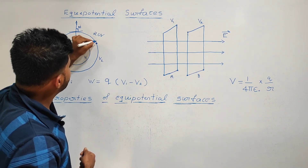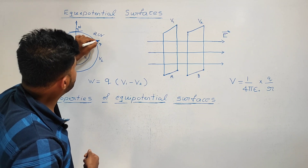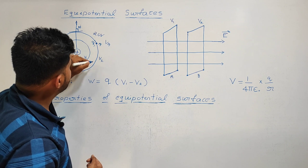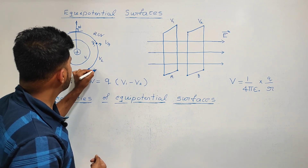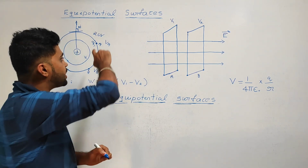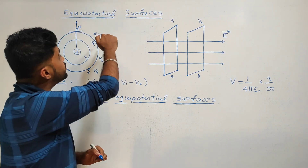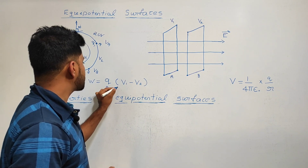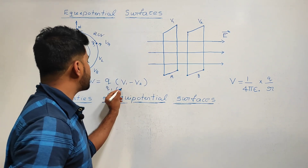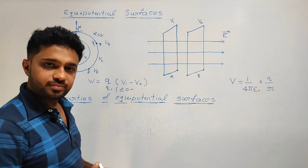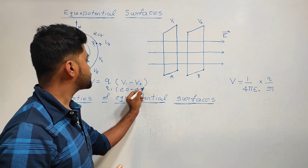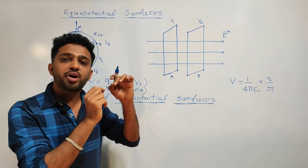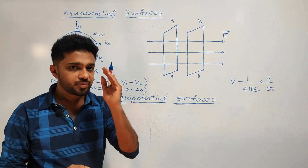This equipotential surface is 20V. At point A, the potential VA equals 20V. At point B on the same equipotential surface, VB is also 20V. So 20 minus 20 is 0. Work done moving a charge from one point to another on an equipotential surface is 0. This is the third property.